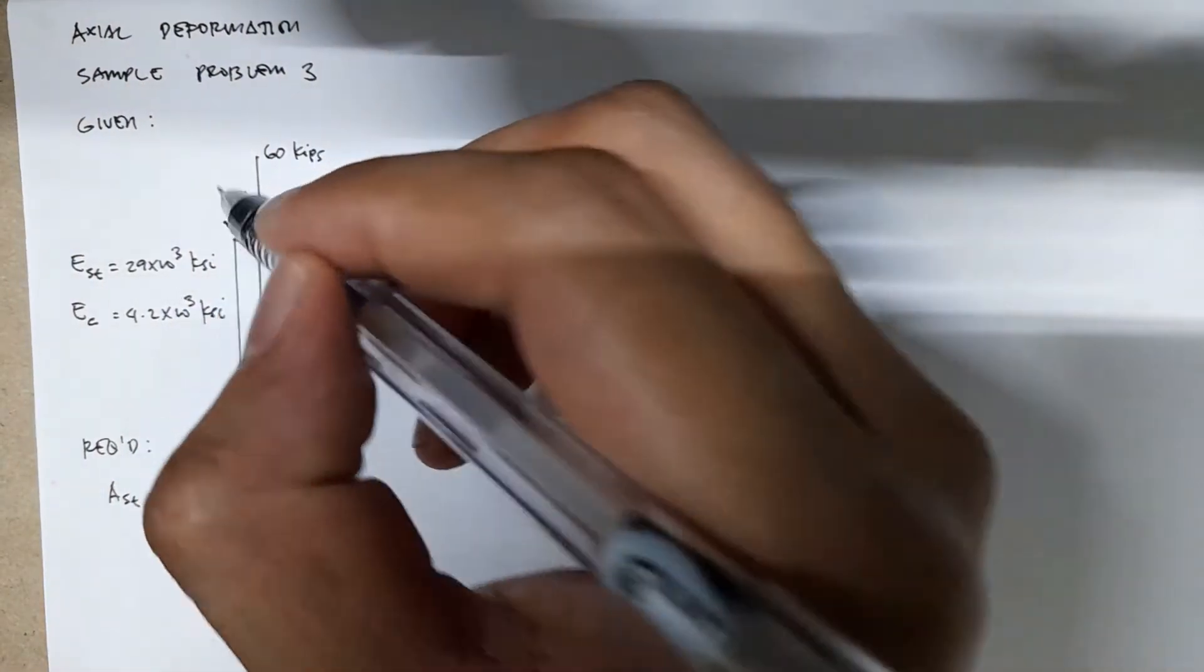We're given dimensions of 8 feet height, 9 inches and 6 inches, and this is 16 inches for the cross-sectional area. We have the modulus of elasticity: Ec = 4.2 ksi and Est = 29 ksi. Steel has much higher modulus of elasticity compared to concrete.